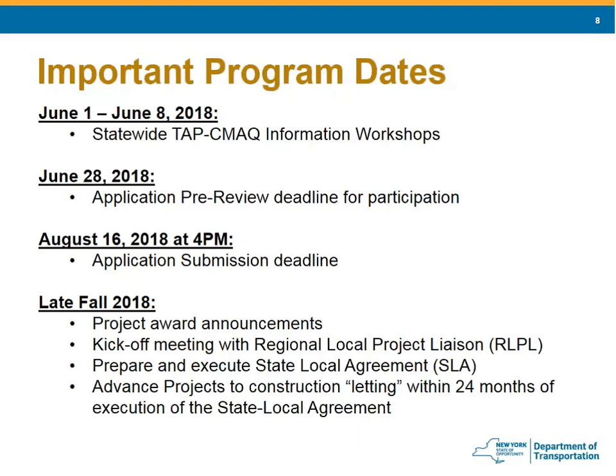The next slide covers important dates. June 1st to June 8th — we're right in the middle of that now, going around doing webinars and workshops. June 28th is the application pre-review deadline. It's worth five points. August 16th at 4 p.m. is the hard application submission deadline. After we receive applications, they'll be scored and reviewed, and in late fall we'll announce the project award winners. There will then be a kickoff meeting with your regional local project liaison.